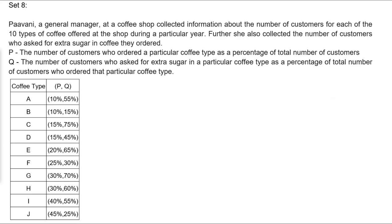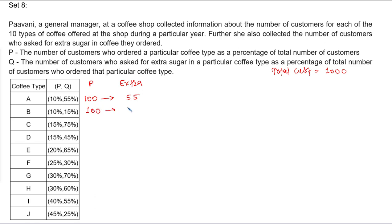So let's assume that total number of customers is equal to 1000. Out of these 1000 customers, how many ordered coffee type A? 10 percent, that's 100. Out of that, 55 percent asked for extra sugar — that is 55 people. Coffee type B is 10 percent of total customers, again 100, and 15 percent of that is 15 people who asked for extra sugar. Coffee type C is 15 percent of total customers, which is 150, and out of that 75 percent asked for extra sugar.